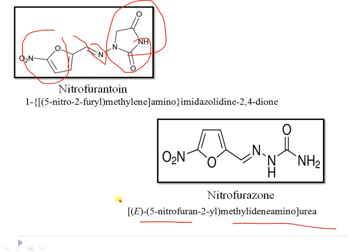Nitrofurazone occurs as a lemon-yellow crystalline solid, sparingly soluble in water and practically insoluble in organic solvents. It is used topically in the treatment of burns, especially when bacterial resistance to other agents is a concern, and may also be used to prevent bacterial infections associated with skin grafts. Nitrofurazone has a broad spectrum of activity against gram-positive and gram-negative bacteria but is not active against fungi. It is available in the form of solutions, ointments, and suppositories.